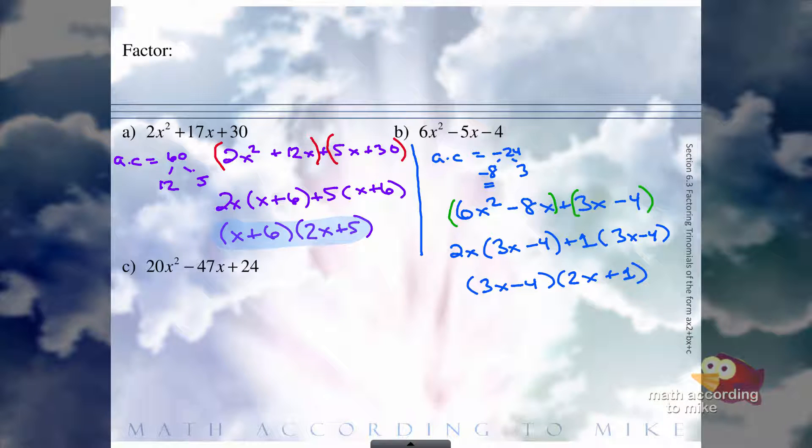So that is the factorization of 6x squared minus 5x minus 4. Now before we do the last one here, I'll ask you to pause the video, try it on your own, and play the video to see how you did.